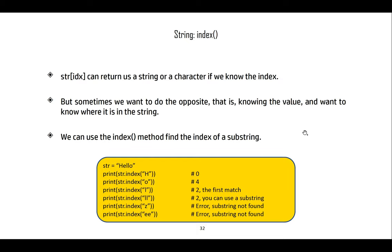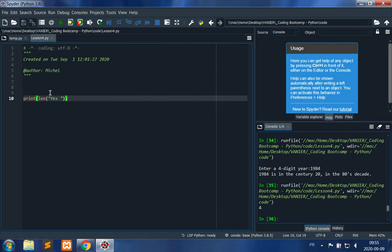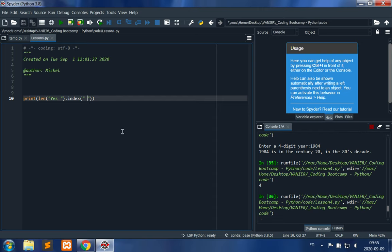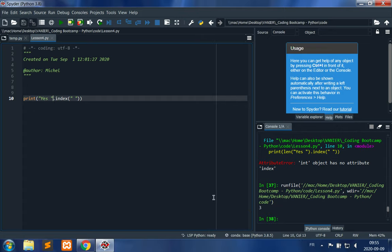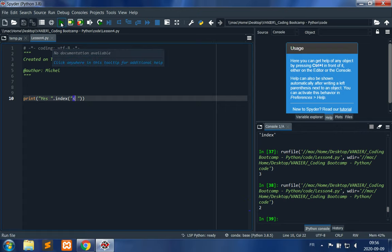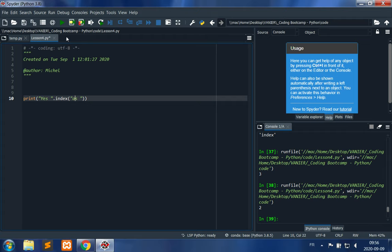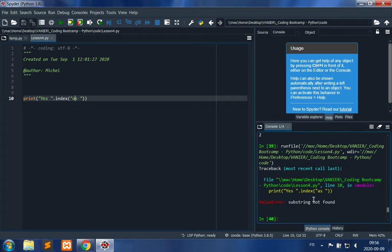Let's have a look. For example, if I have 'yes '.index and provide it with space, I should get the index of the space. There we go, the index inside 'yes ' of this space. What if I wrote 's'? The index is 2 because that substring starts at index 2. What if I put something that doesn't exist? I get substring not found, value error.